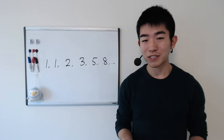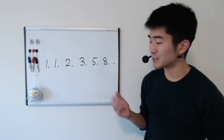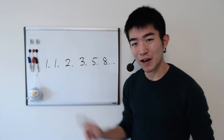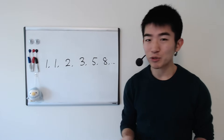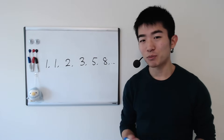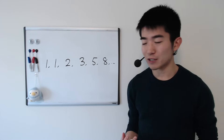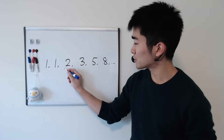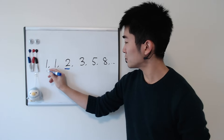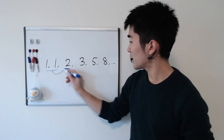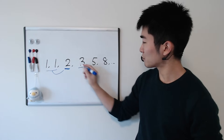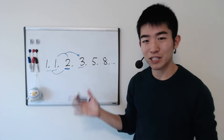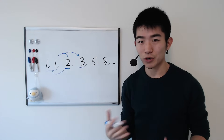Just in case you're not familiar with it, the Fibonacci sequence is a sequence of numbers that starts with two ones at the beginning. Each number after that is computed by adding up the two previous numbers. So the third Fibonacci number is 2 because 1 plus 1 equals 2, and the fourth Fibonacci number is 3 because 1 plus 2 equals 3, and so on. This sequence keeps on going forever.